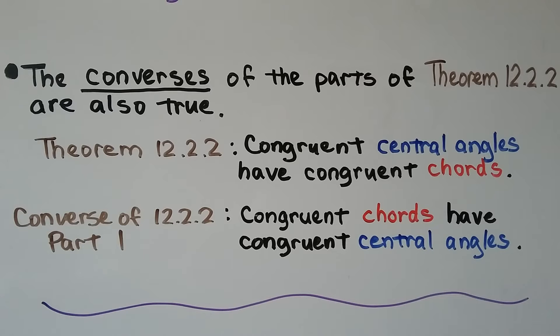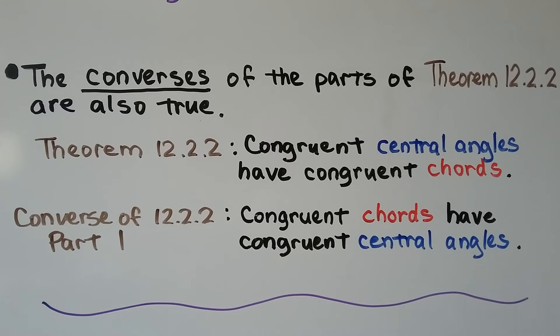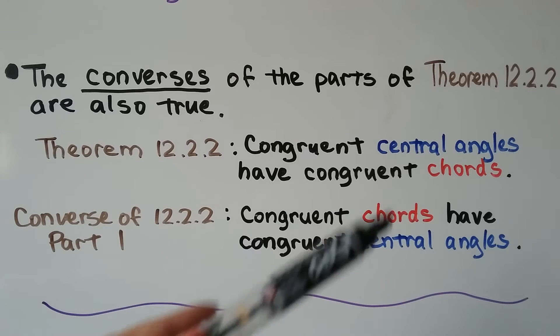The converses of the parts of theorem 12.2.2 are also true. So theorem 12.2.2, part one, said congruent central angles have congruent chords. And the converse of that part one would be congruent chords have congruent central angles. See? How they swapped places.